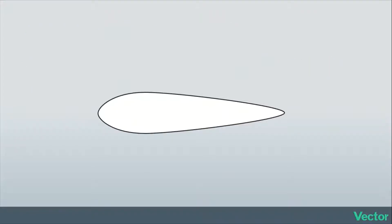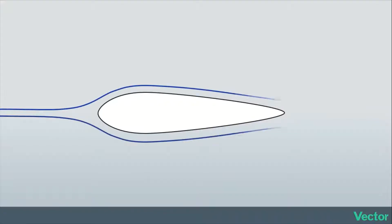Let's look at a symmetrical airfoil. When a symmetrical airfoil is at a zero angle of attack, the airflow will pass over the upper surface and under the lower surface in the exact same way. Whatever happens to the flow above the upper surface is going to happen in the exact same way to the flow underneath the lower surface.